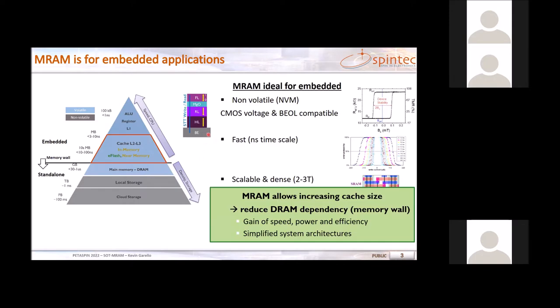MRAM is also interesting because in the memory hierarchy there is regular transfer of data between embedded and standalone memories. Introducing non-volatile memory allows simplification of the memory hierarchy and reduces data transfers toward standalone memories. This addresses what we call the memory wall, which costs a lot of energy and latency, resulting in significant gains in speed, power efficiency, and simplified system architecture.